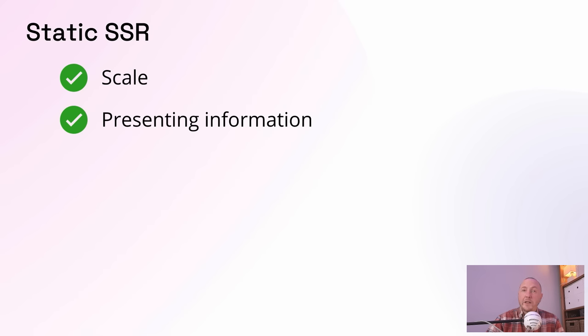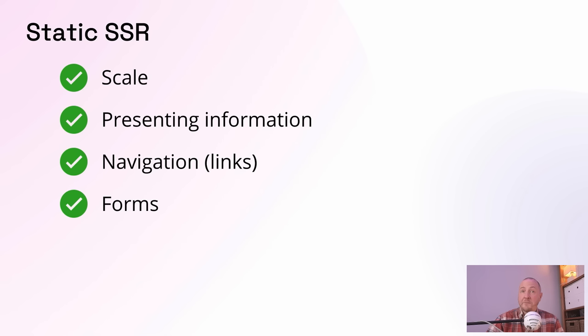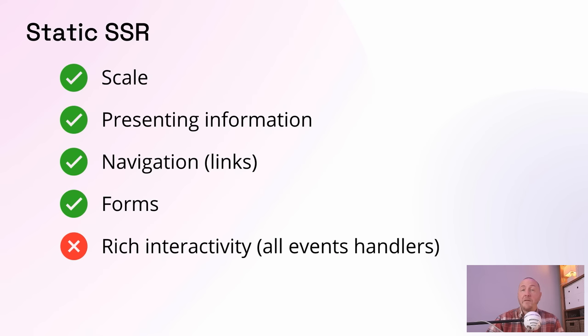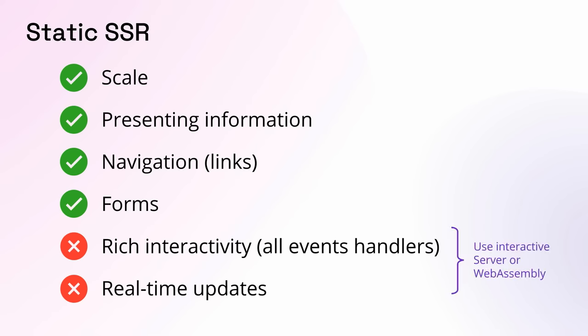Static server rendering is really good for sites that are mainly about presenting information — mostly read-only public websites like blogs, e-commerce, search engines — where the user is mostly reading information and interacting through links and forms. It's not ideal for arbitrary rich interactivity like a single-page application, and it's not good for pushing real-time information since no code runs in the browser after the page loads. But if you want either of those things, you can mark any component or page as running on Blazor Server or WebAssembly for full interactivity, as I'll show you later.